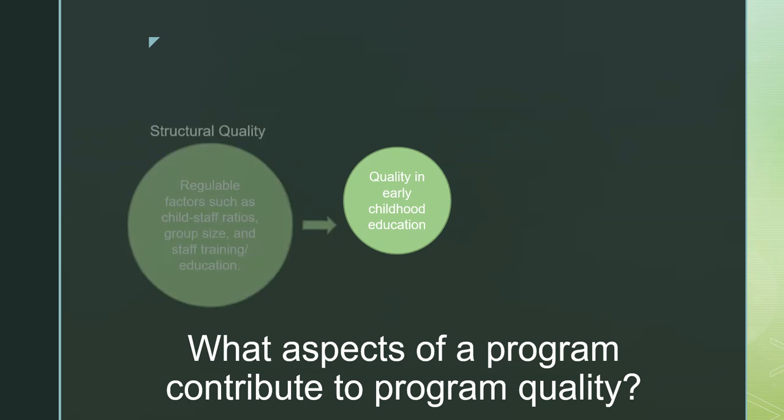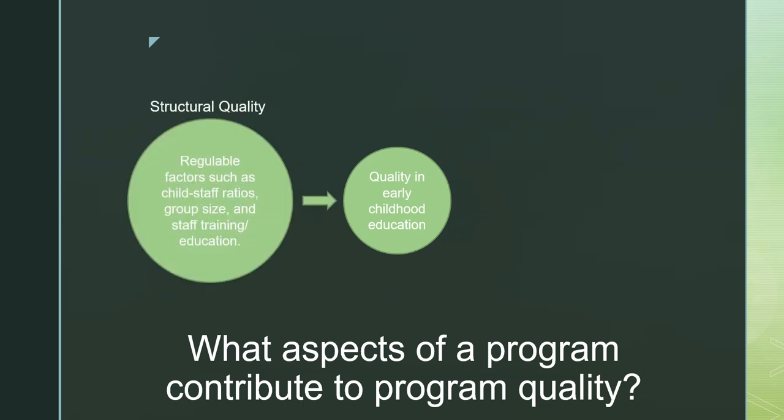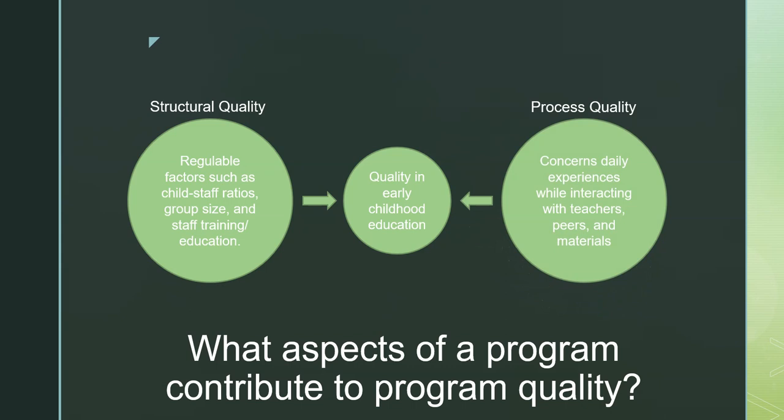Our textbook describes process quality as being related to interactions and structural quality as being not necessarily physical, although the square footage of the play space is included. Class size, teacher-to-child ratios, teacher qualifications and pay, all of these and more are included.